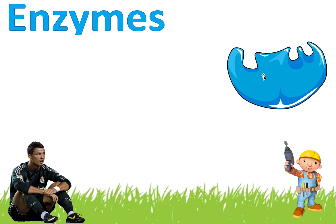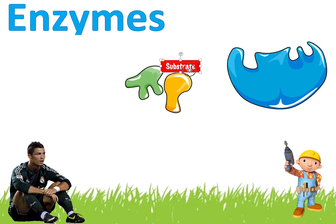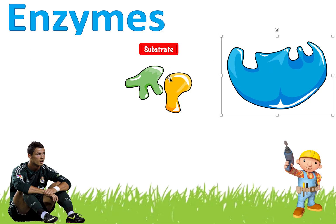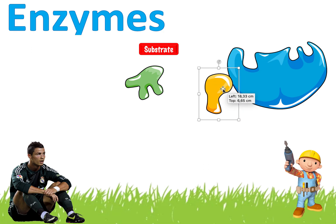An enzyme will interact with something called a substrate. So let's take a scissor — a scissor could represent an enzyme, and a scissor can interact with paper, so paper would be a substrate for the scissor. In this case, here's the enzyme, and these are the two substrates for this enzyme, because they are made to specifically interact with this area here. They are specifically the right shape and right size to fit right into this enzyme.